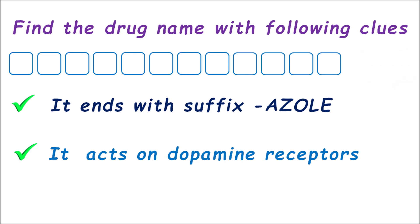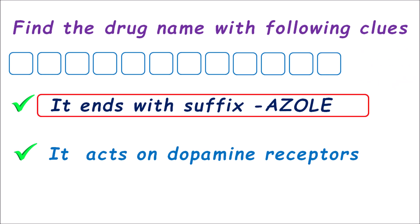Now let us go with the solution for this puzzle. The first clue: it ends with the suffix -azole. You can simply fill the suffix -azole in the blocks. When we see the word azole we can easily remember azole antifungals, so you may think that the drug belongs to the azole antifungals. But in pharmacology we come across different types of drugs which still have the same suffix -azole.